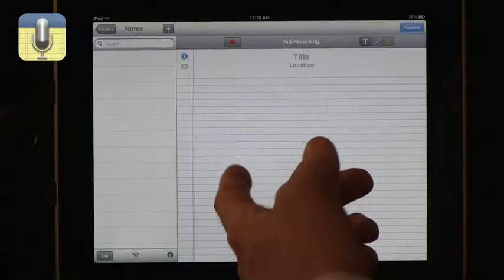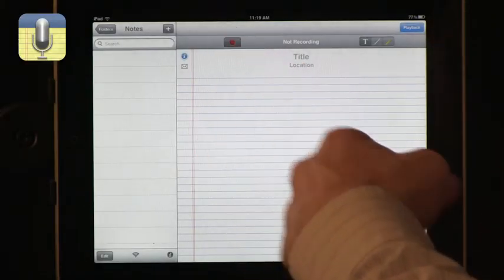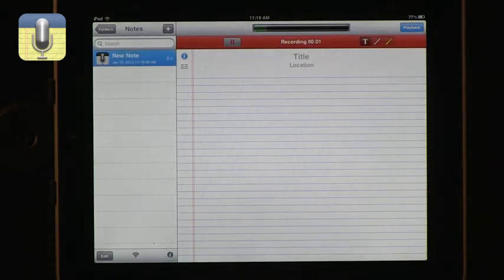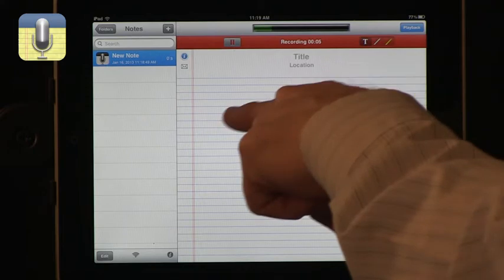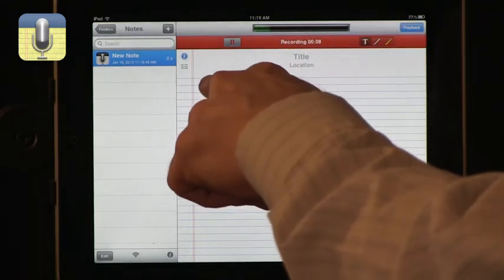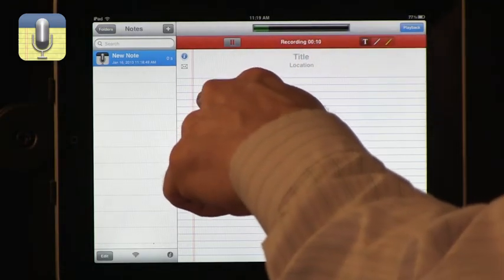Basically what you get here is an app that can record what is going on and allows you at the same time to take notes. So for example, if I press this red button, a recording starts and it tells you exactly how much it's recording and that it is recording. It goes red. And then you can start writing.